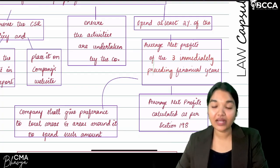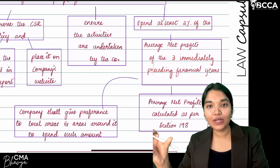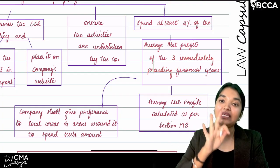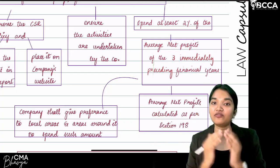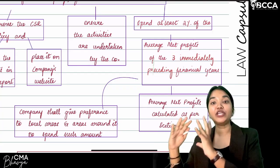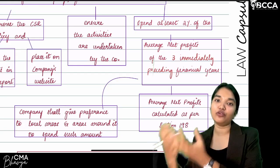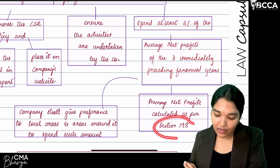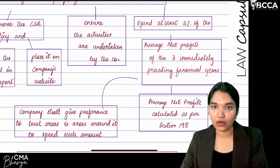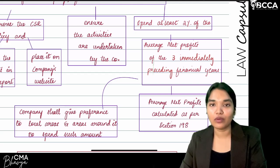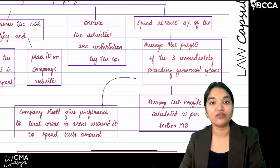A special point is the minimum contribution: the company must incur 2% of average net profits every year on CSR activities. The average is calculated over the immediately preceding 3 financial years — total the net profits of those 3 years, divide by 3, then multiply by 2%. Net profits are calculated as per Section 198. If there are losses, net profit will be zero, and therefore no CSR amount needs to be spent.